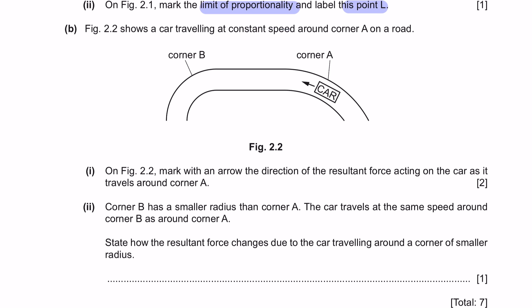Question B. Figure 2.2 shows a car traveling at a constant speed around corner A on road. So this here is the corner and this car is traveling at a constant speed. Part 1: On figure 2.2, mark with an arrow the direction of the resultant force acting on the car as it travels around corner A. Let's first understand what is resultant force. When two or more forces are applied to an object, the object will only move in one direction, and this would be the direction of the resultant. So let's identify the forces that are acting on the car. The car is moving at a constant speed in this direction, and there is another force that acts on the car, which is the centripetal force acting towards the center of the circle. The centripetal force here is the friction. So the resultant force would be acting in this direction.